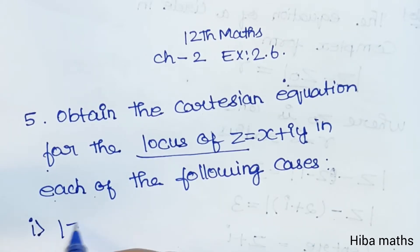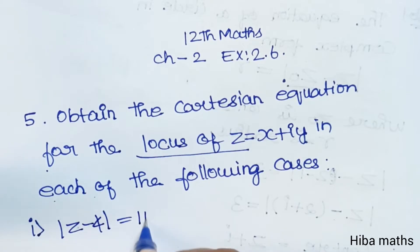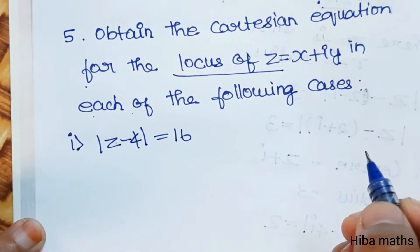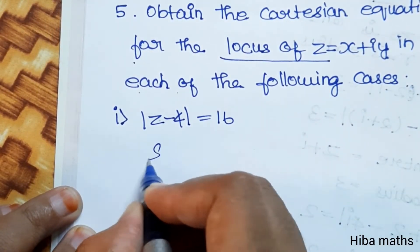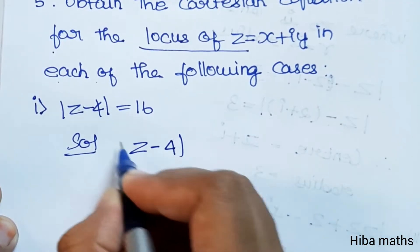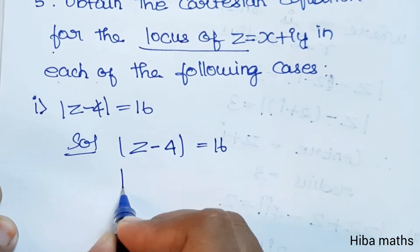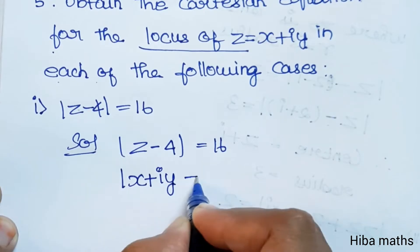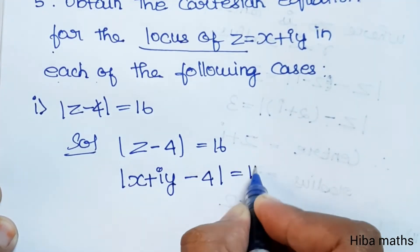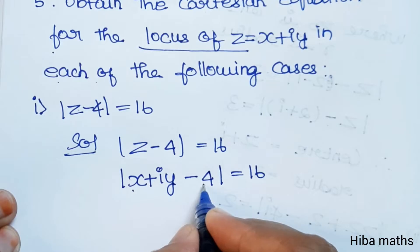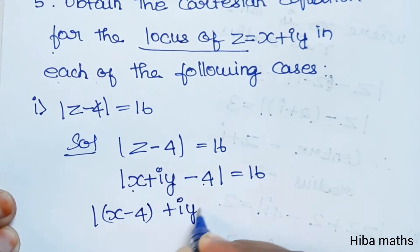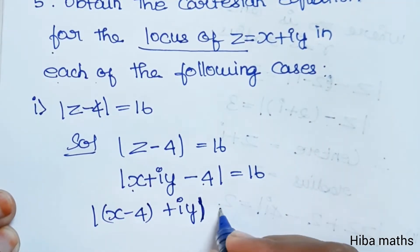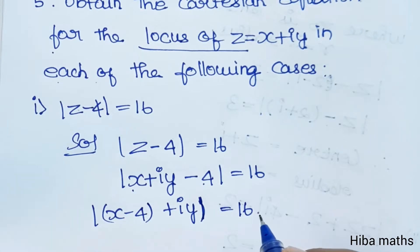First question: |z - 4| = 16. The solution is: z = x + iy, so |z - 4| = |(x - 4) + iy| = 16. The real part is x - 4 and the imaginary part is y, so we compute the modulus equal to 16.